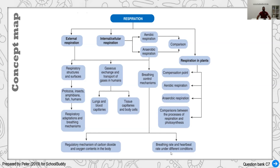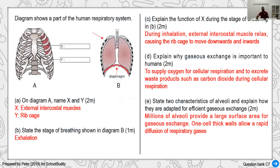Now we'll look at example questions on the human respiratory system. We have a diagram showing structures with and without bones, labeled A and B. In part A, we need to label two parts: the outer part of the rib cage refers to the external intercostal muscle, and the rib cage itself, which contains and protects the heart, lungs, and diaphragm.